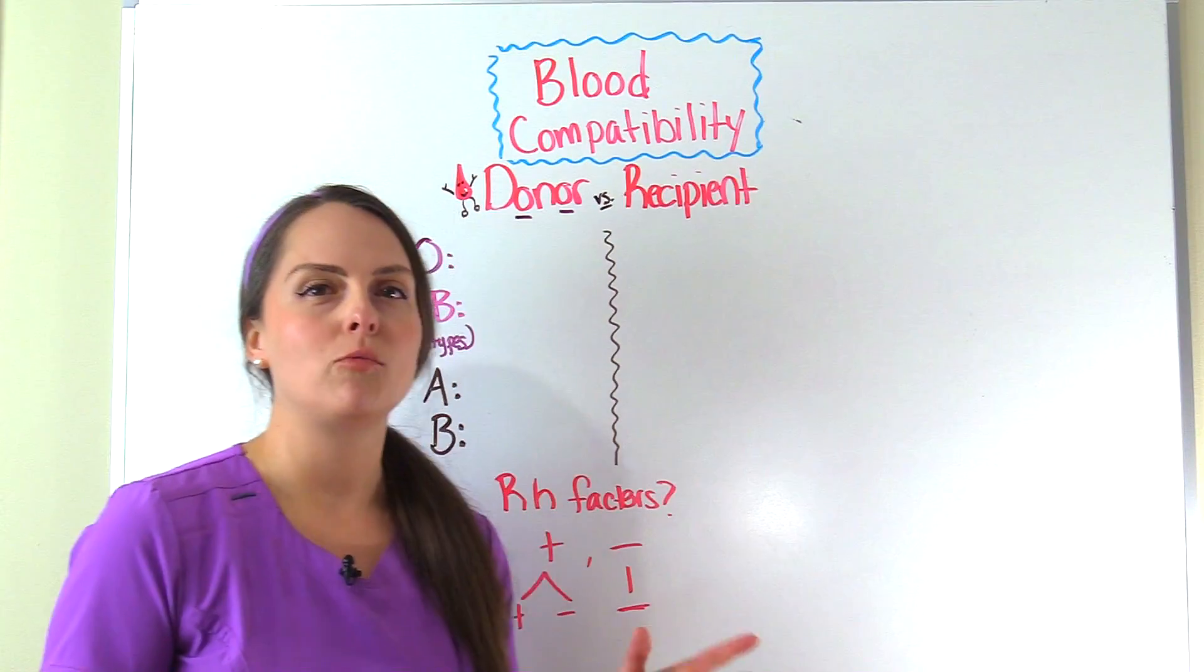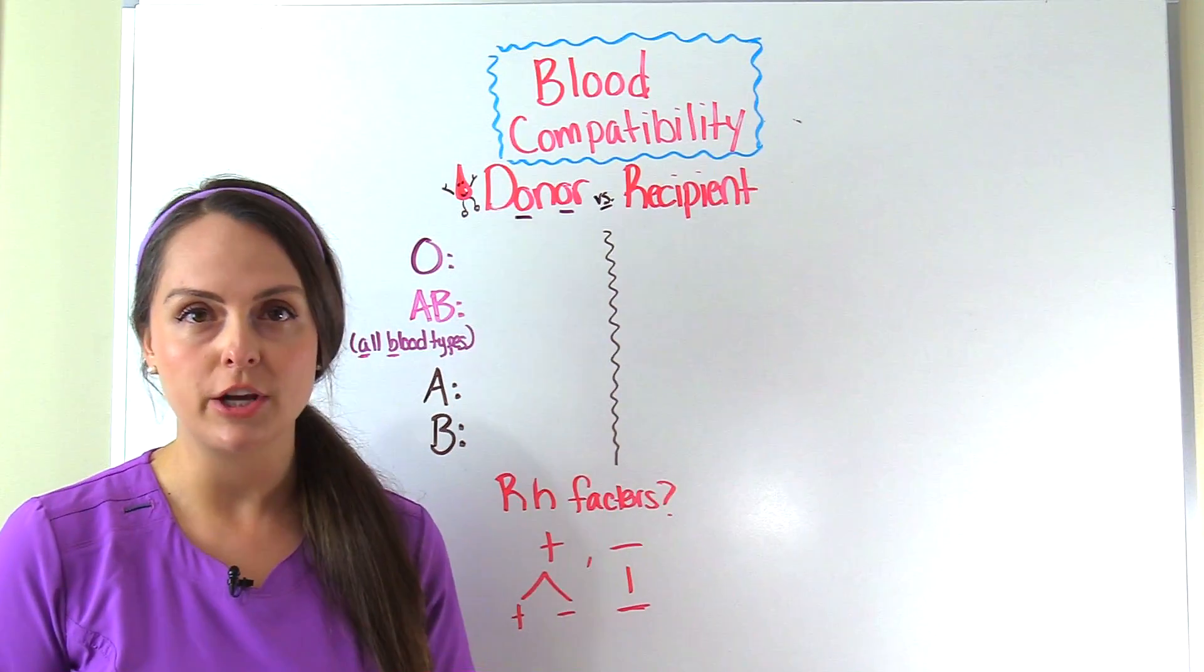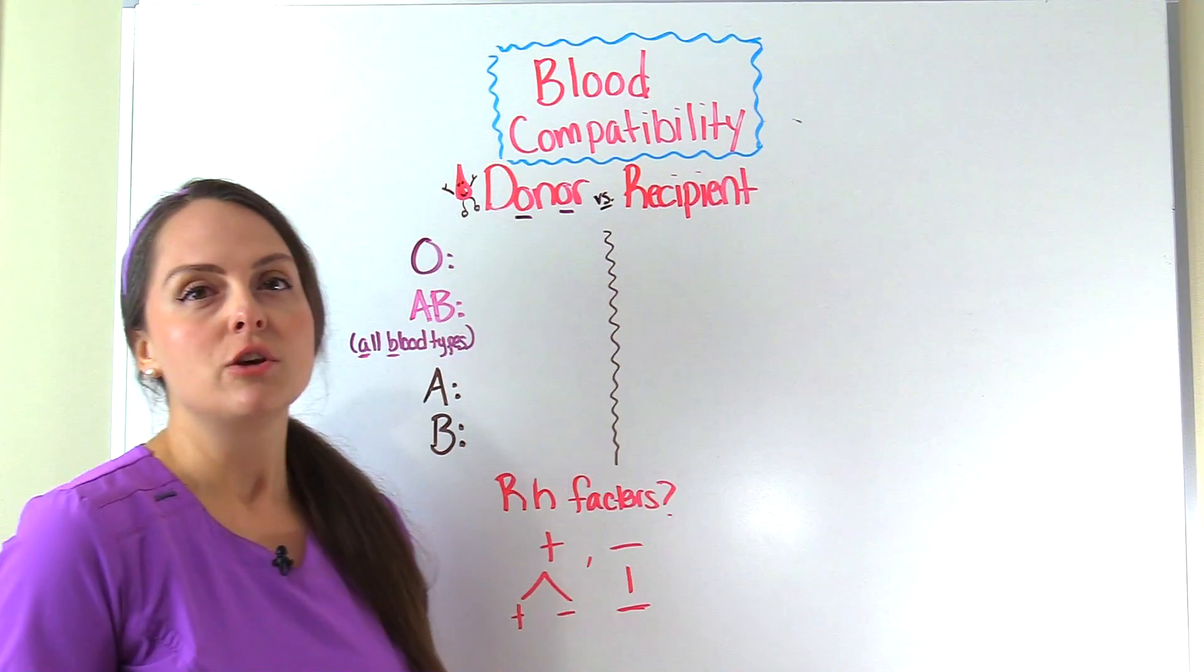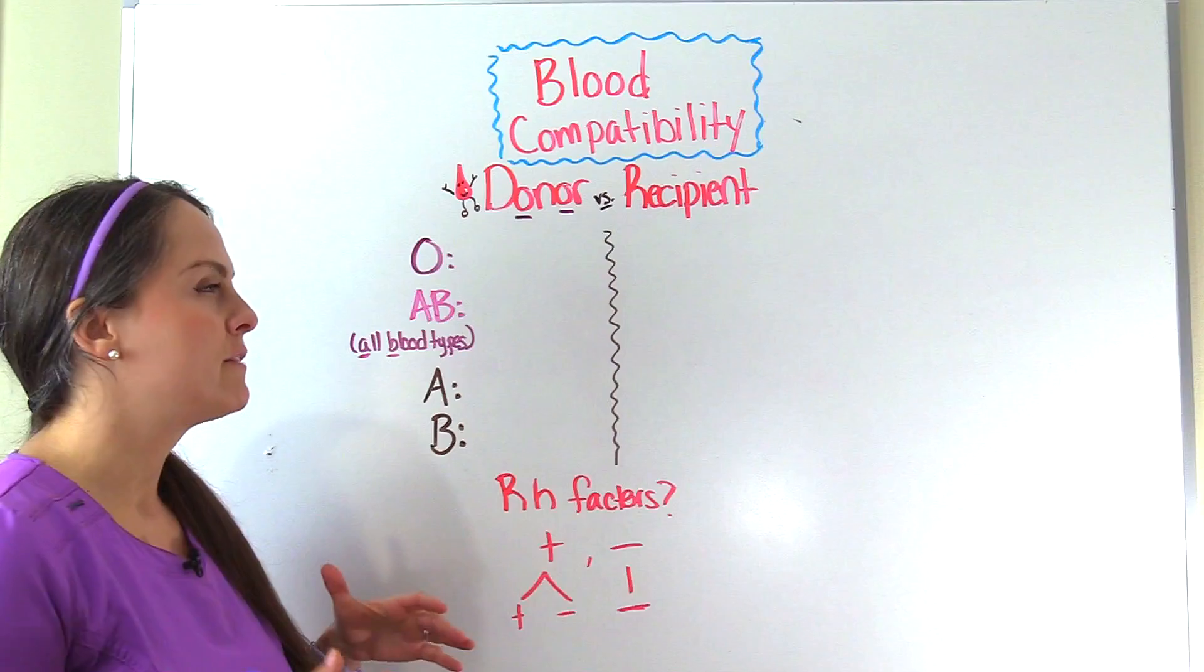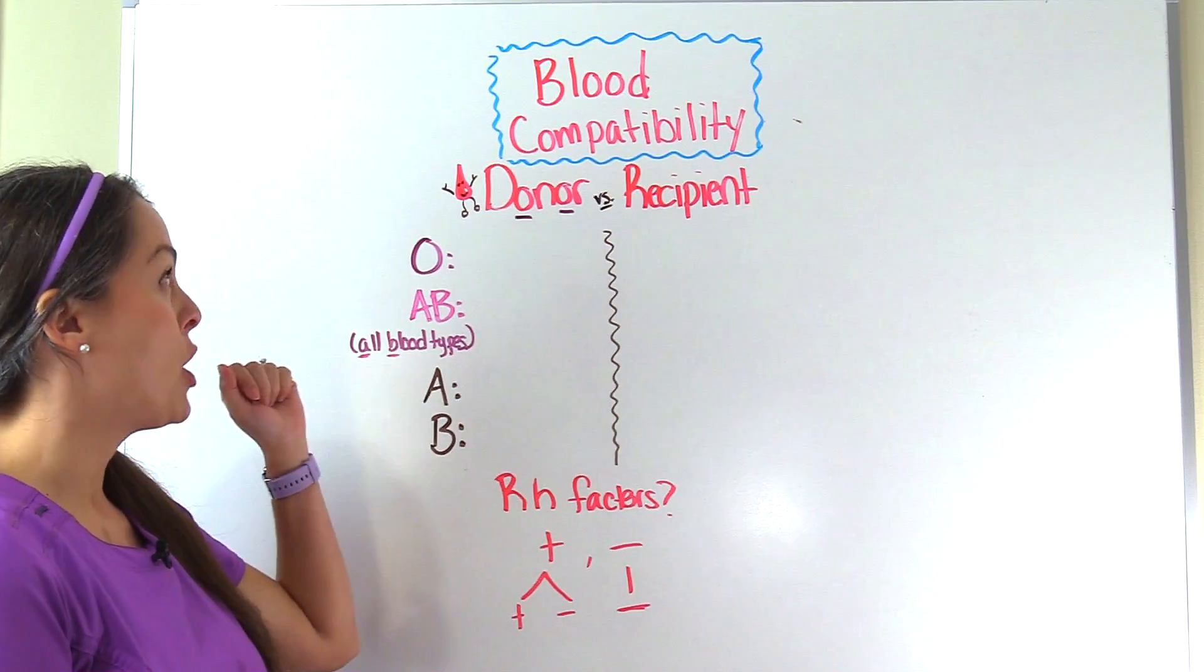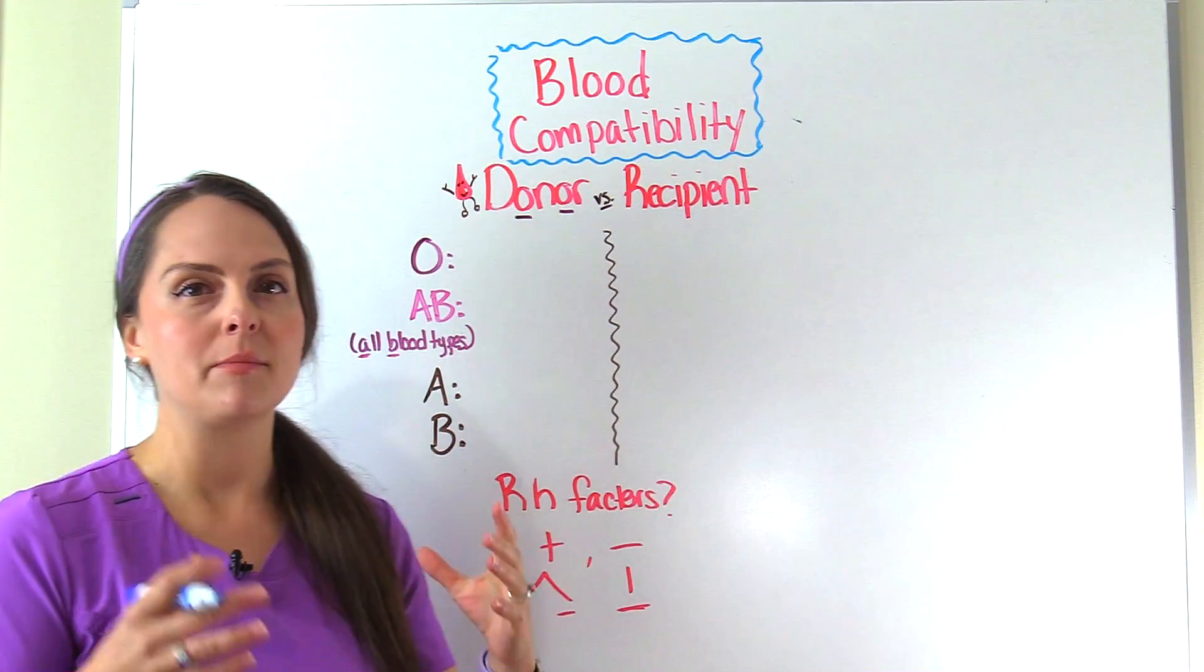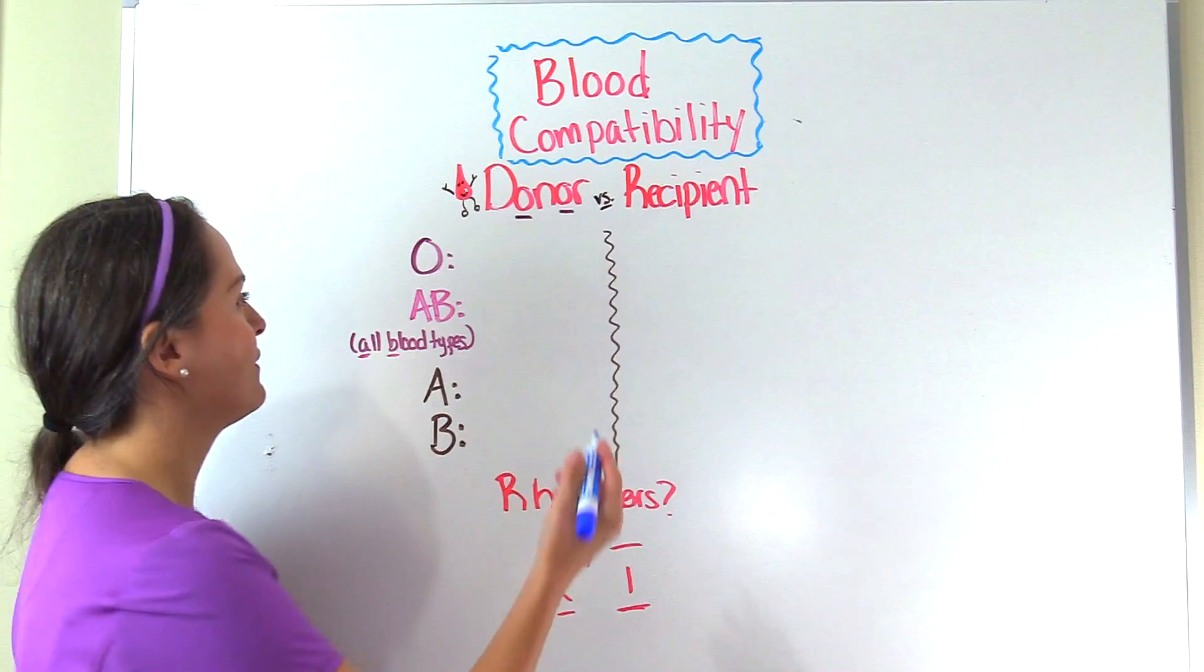Now whenever you're studying this material, you want to memorize the universal donor and universal recipient. A universal donor is a blood type that can freely give to all blood types. Blood type O is the universal donor, and I remember this because the word donor has two O's in it.